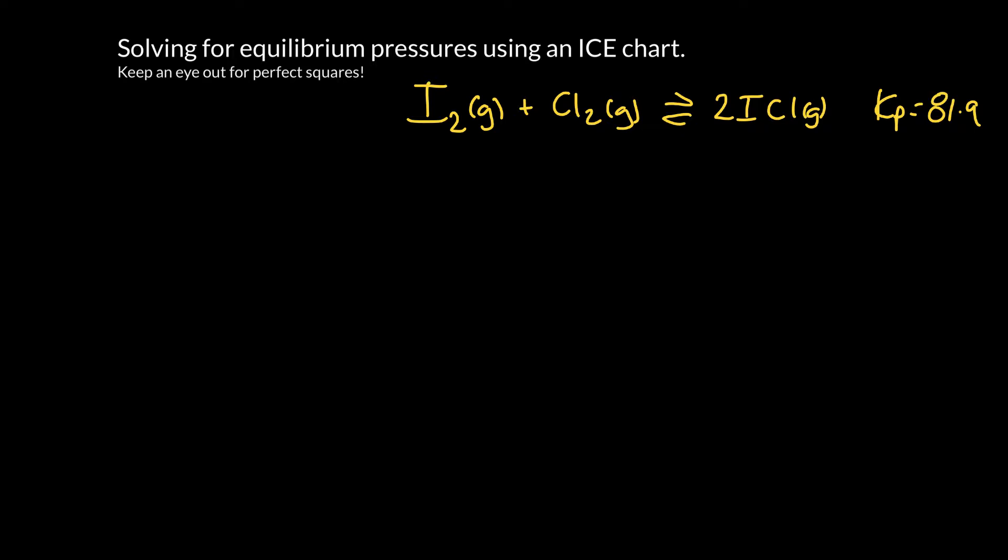We're going to start off with some initial partial pressures. If we start out with the partial pressure of the iodine, the chlorine, and the ICl, the iodine monochloride, all starting at 0.1 atmospheres, that's the initial pressure. What would the final partial pressures be?